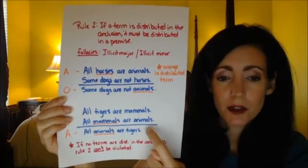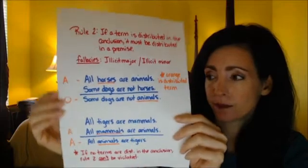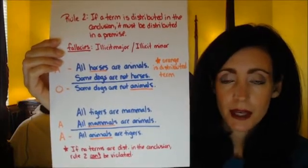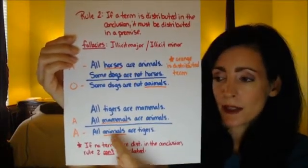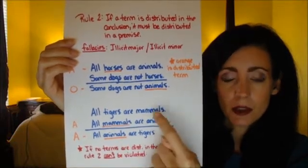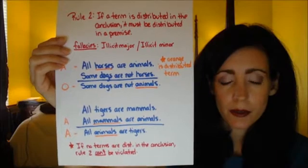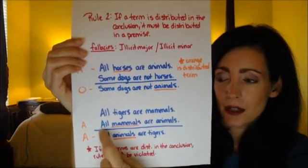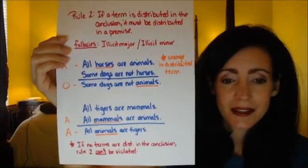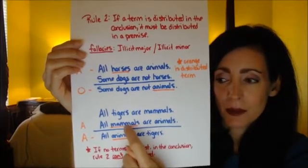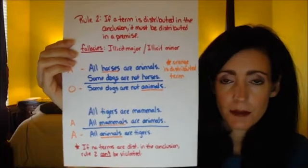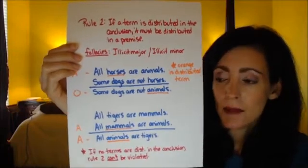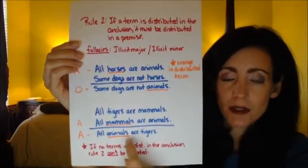The second example commits an illicit minor because we're talking about the minor term. The conclusion says 'all animals are tigers' — an A statement, so 'animals' is distributed. Looking at the premises, 'animals' occurs in the second premise: 'all mammals are animals.' With an A statement, the subject is distributed, so 'mammals' is distributed — not 'animals.' So this commits the fallacy of illicit minor, because it's the minor term that should have been distributed.